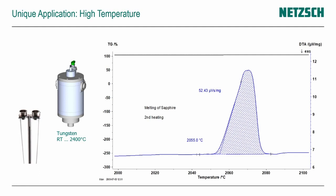The last unique application for the STA is its temperature range. With different furnace options, we can connect a tungsten furnace with a tungsten heating element and measure up to temperatures of 2400°C, allowing analysis of ceramics or high melting metal alloys — which is simply not possible with small tabletop dedicated DSC systems.